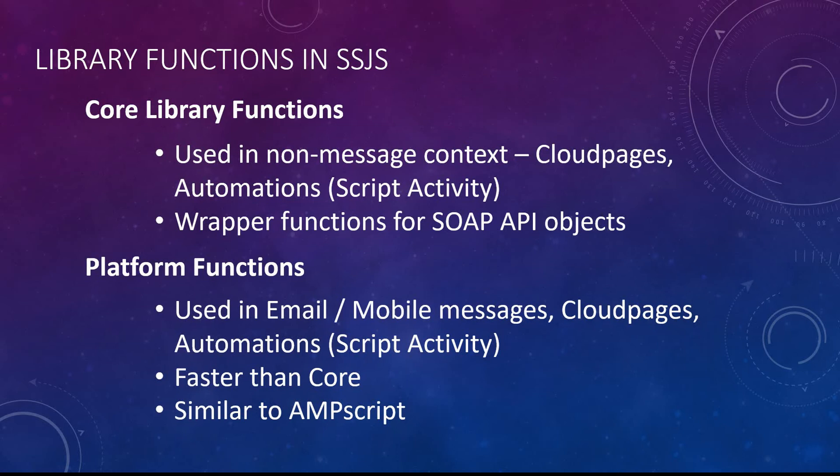Platform functions are faster than core functions and are somewhat similar to the counterpart functions in Ampscript. Most of the time, developers prefer to use Ampscript over platform functions in message contexts like emails because Ampscript is pre-compiled. JavaScript being more dynamic, it's not possible to have a pre-compiled option. But for complex scenarios where JavaScript is better, developers have the choice to go with SSJS functions. The core functions are much more powerful because they have access to the SFMC SOAP objects.